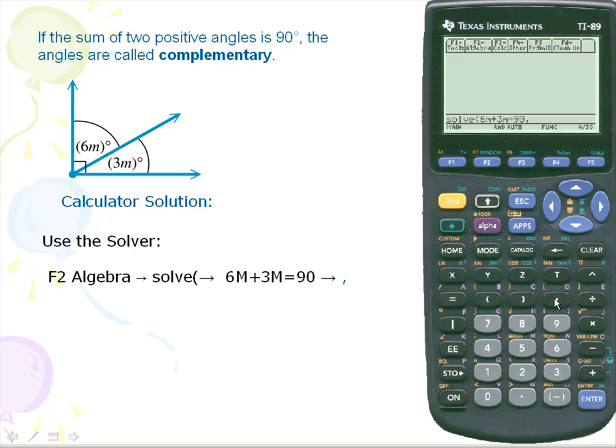I'm going to use a comma and we're going to put in a variable of our function which is m. We're going to close off the function and we're going to hit enter for a value of 10.